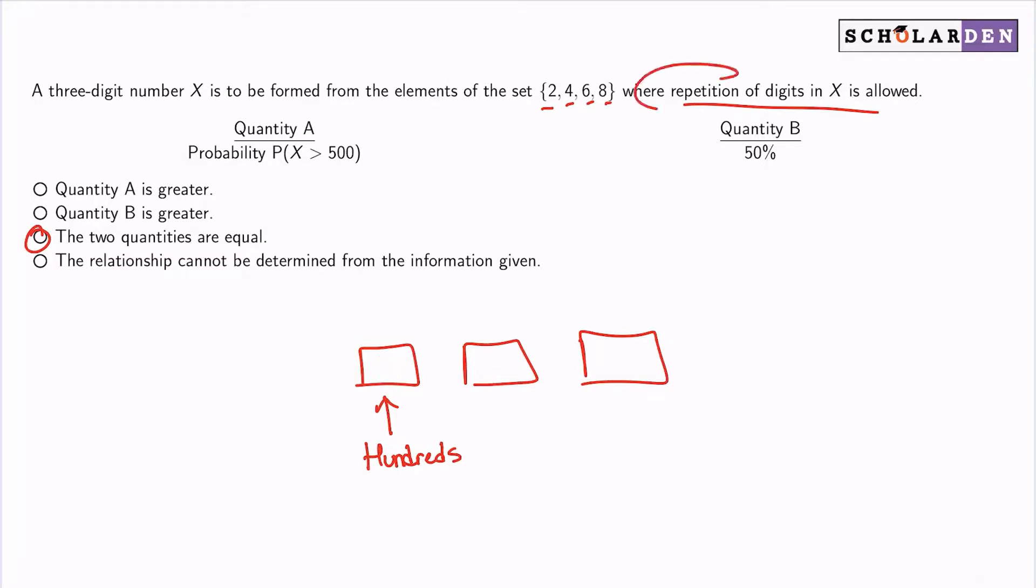Because you can repeat the digits, if you had 600 and anything, that would work, and 800 and anything, that would work. So of the four digits that we can choose for the hundreds digit, 6 and 8 would work.